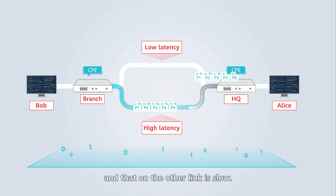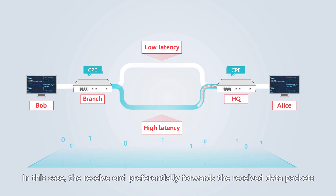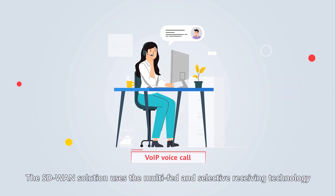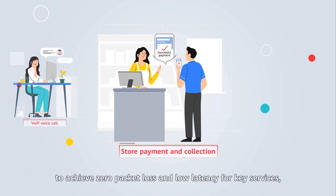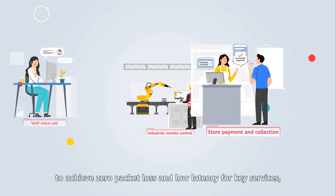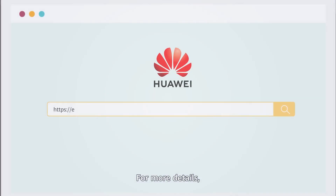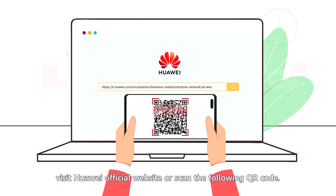If the two links have different delays — data transmission on one link is fast and that on the other link is slow — the receive end preferentially forwards the received data packets to ensure low latency of key applications. The SD-WAN solution uses the modified and selective receiving technology to achieve zero packet loss and low latency for key services, providing users with a smoother service experience. For more details, visit the Huawei official website or scan the following QR code.